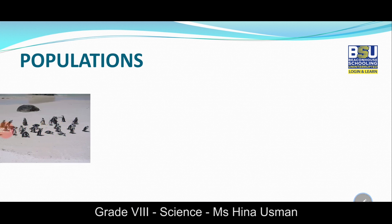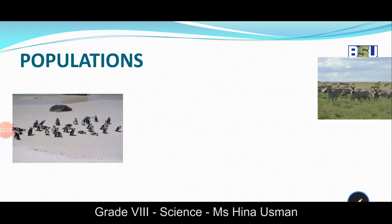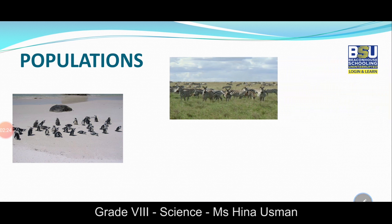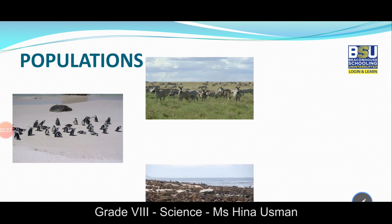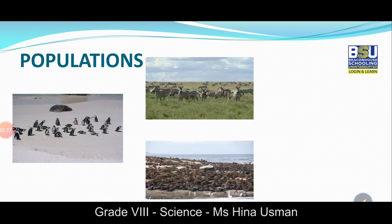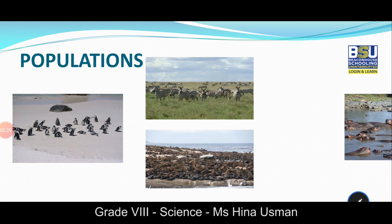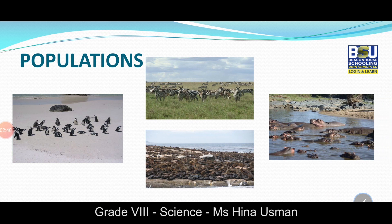Communities together with the non-living things in their surroundings make up an ecosystem, and all the ecosystems on earth make up the biosphere. Look at these pictures: population of penguins, population of zebras, population of seals, and population of hippos. What do you notice about all the animals that make up a population? The answer is: all the animals are of the same species, with different ages and genders.